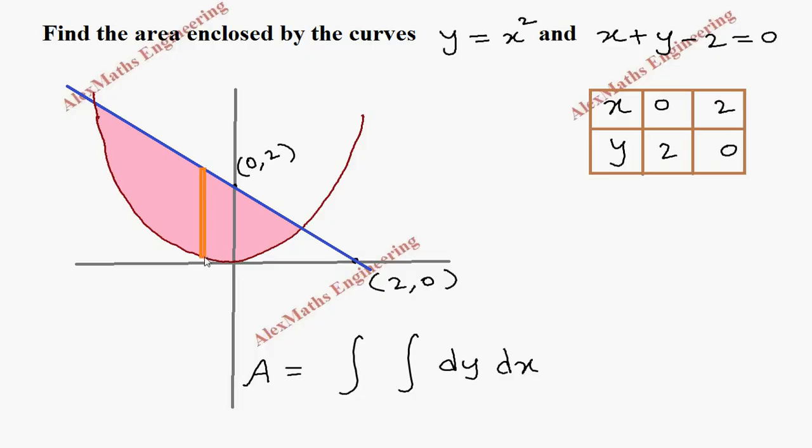Wherever I take the vertical strip, the bottom most touches the parabola always and the top most touches the line always. So let's write the value of y from the parabola: y = x². And from the line, the value of y is 2 - x. So the limit for dy ranges from x² to 2 - x.